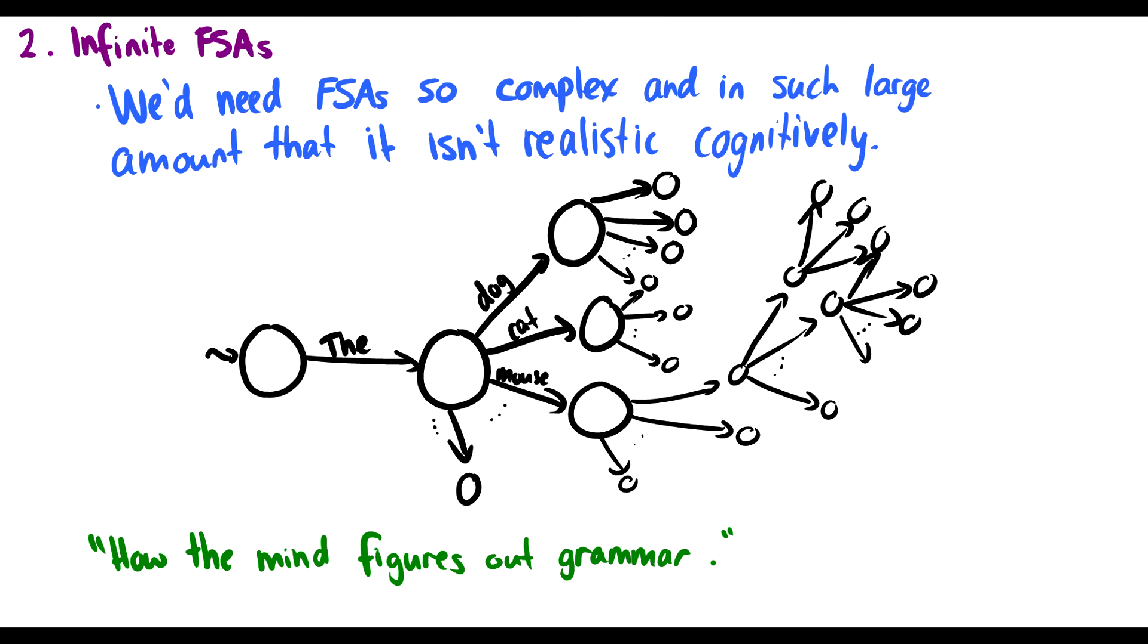Another thing about finite state machines is that we know so many sentences, we have infinite recursion, we can create new sentences we've never heard before. We need finite state machines that are so complex and in such large quantity that cognitively it's just not realistic. You need an infinite amount of finite state machines.